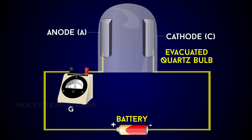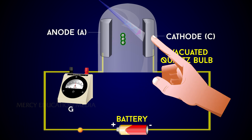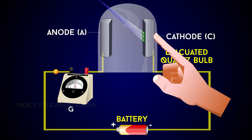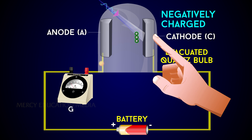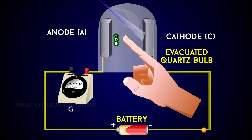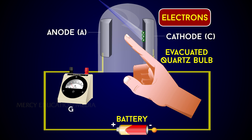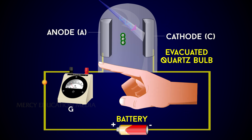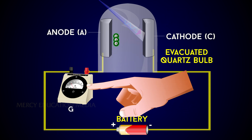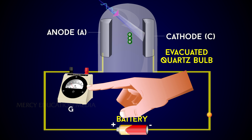These observations reveal that the particles emitted by the plate C due to the photoelectric effect are negatively charged. These particles were found to be electrons. The observed current, known as the photoelectric current, is due to the flow of electrons.